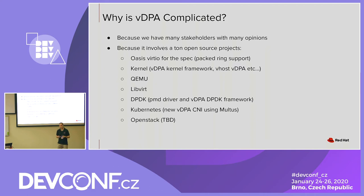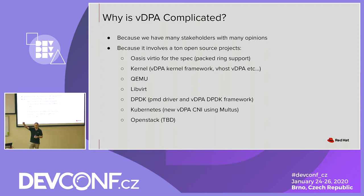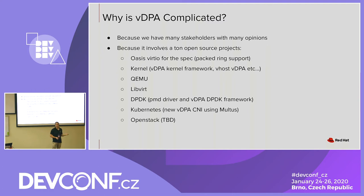Why is VDPA complicated? First, many stakeholders and many opinions. Second, it touches so many things. You need to work on the kernel, QEMU, libvirt, DPDK, Kubernetes, OpenStack — many communities. It's something conceptually small — just your first interface to move from your container into the NIC — but in practice it requires coordinating across so many components.